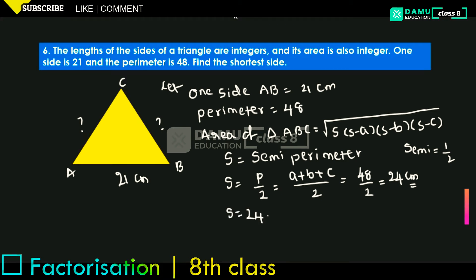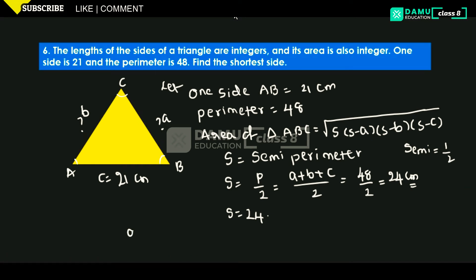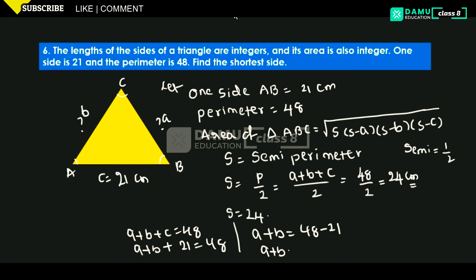We know the perimeter and one of the sides. Let's label the sides: opposite to vertex A is small a, opposite to B is small b, and opposite to C is small c. So a plus b plus c equals 48. Taking c as 21, we get a plus b equals 48 minus 21, which is 27. Therefore a equals 27 minus b.